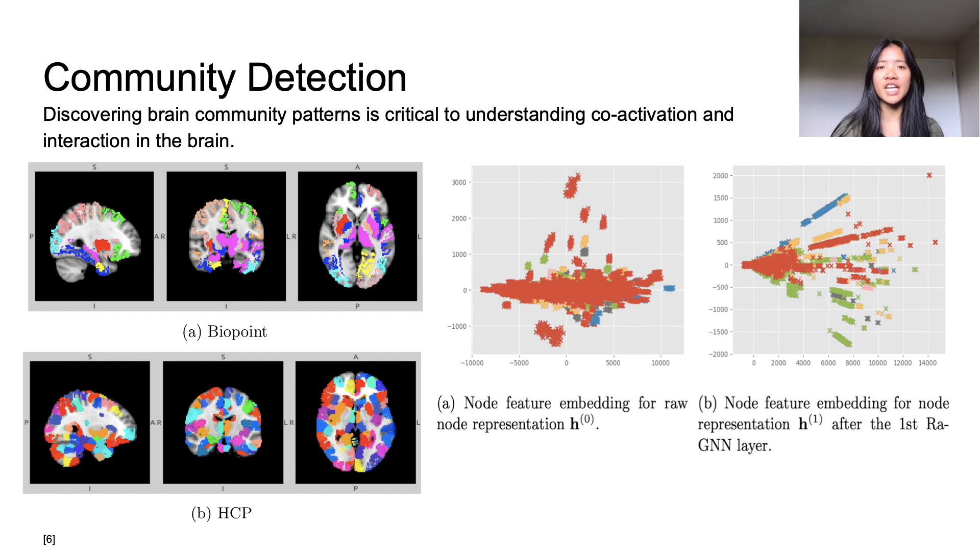On the right, we see a visual representation of the node features before and after the first convolutional layer. Before the layer, it is extremely difficult to identify clusters of nodes. However, through the kernel embedding, similar nodes are able to aggregate into communities that we can easily identify based on color. This information can be translated into actual clustering patterns in different brain regions as seen on the left. Each color represents a community, and although regions that cluster may not be geographically close, the network identifies that they share similar features or processes.